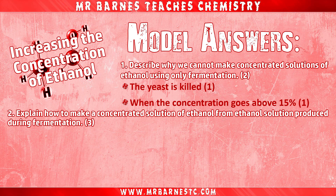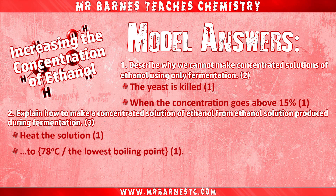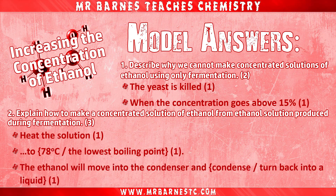Question two: How can we use simple distillation to make a concentrated solution of ethanol? This is worth three marks. You get one mark for saying heat the solution, the second mark for saying heat it until the temperature is 78 degrees or to the lowest boiling point, and the third mark for saying the ethanol will move into the condenser and turn back into a liquid.